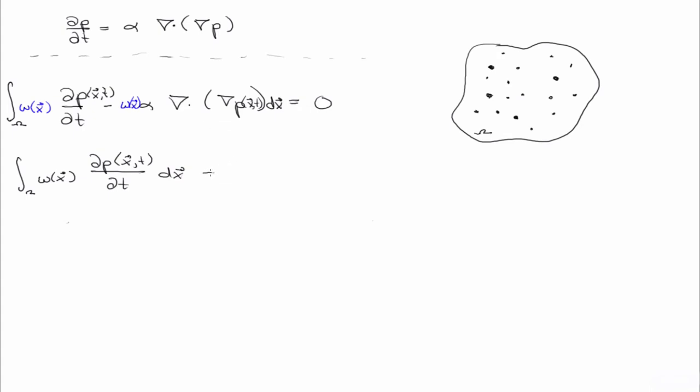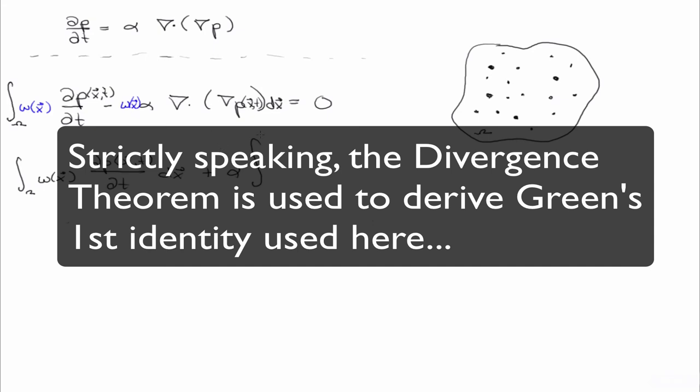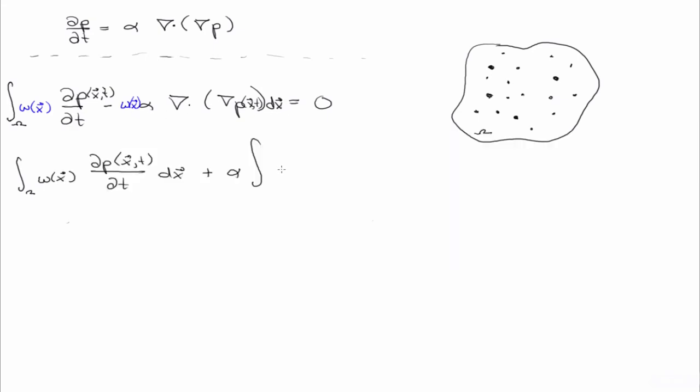And so what that's going to give me, the divergence theorem, remember, is how you can convert, it's one way to convert a volume integral into two terms, into a volume integral. This is straight from vector calculus. So using this divergence theorem, or Green's identity, then I have...